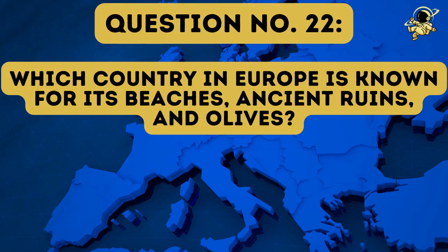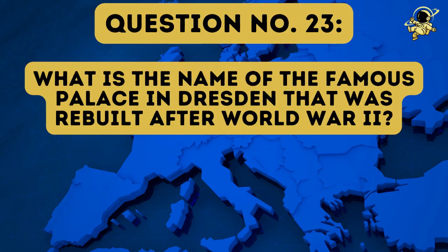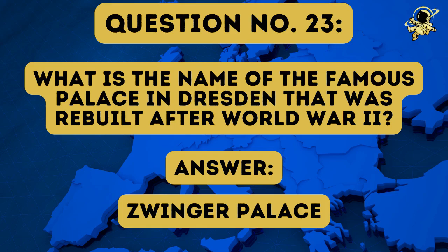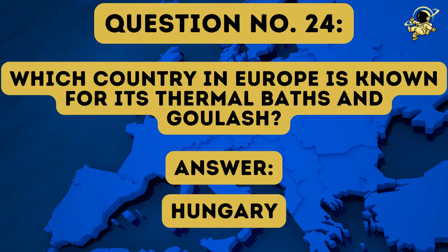And then we have question number twenty-two: Which country in Europe is known for its beaches, ancient ruins and olives? The answer to question number twenty-two is Greece. And then we come to question number twenty-three: What is the name of the famous palace in Dresden that was rebuilt after World War II? And the answer to question number twenty-three is the Zwinger Palace. Question number twenty-four: Which country in Europe is known for its thermal baths and goulash? And the answer to question number twenty-four is Hungary.